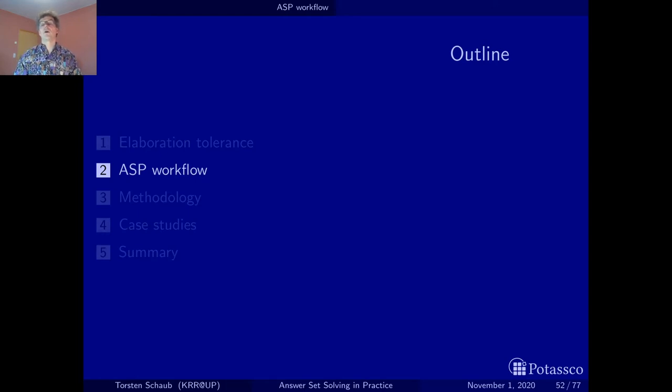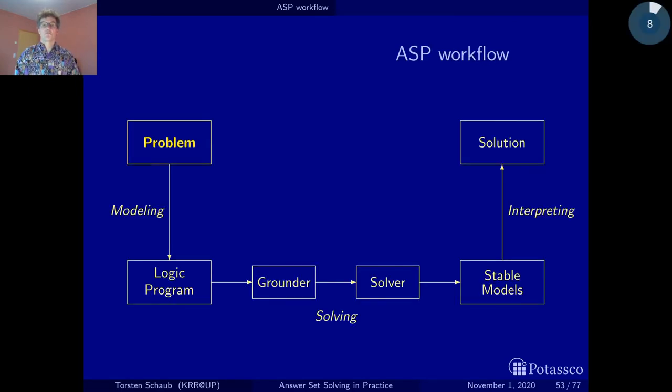Let me start by recalling and detailing the workflow that I've already sketched in the motivation section. We start with a problem. Then the first step is to model this problem, that is to represent it formally in form of a logic program. This is normally not a single logic program. It's at least two, one for the problem class, the actual encoding, and one for the problem instance, which is usually a set of facts.